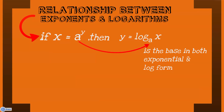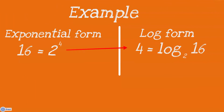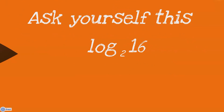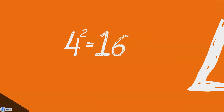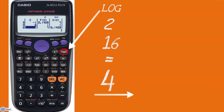Let's go further. In exponential form, given 16 is equal to 2 to the power 4, in logarithm form we say that this is 4 equals log base 2 of 16. Again, note that the base is the same. Ask yourself this: to what power must 2 be raised to get 16? Surely this should be 4, because 2 to the power 4 is equal to 16. The other way you can do this is to use your calculator — simply punch in the logarithm button, then your base 2 and 16, and you get your answer of 4.